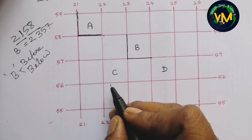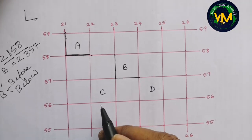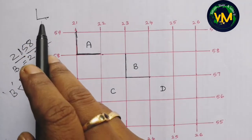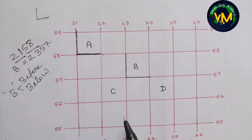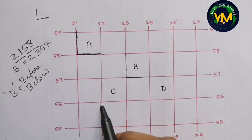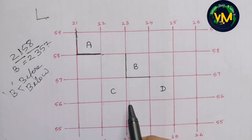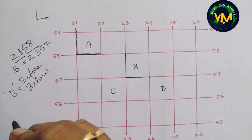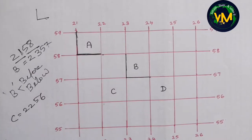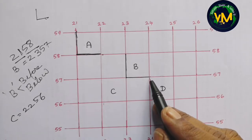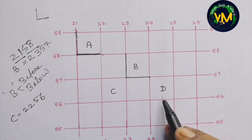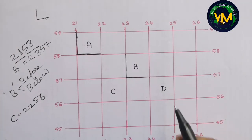Try doing for place C, everyone — using either the B rule or the capital L method. The first line is 22 and the second line is 56, so for C the answer is 2256. Now what about place D? The answer is 2456. Even without drawing the capital L, you should be able to find the four-figure grid reference.